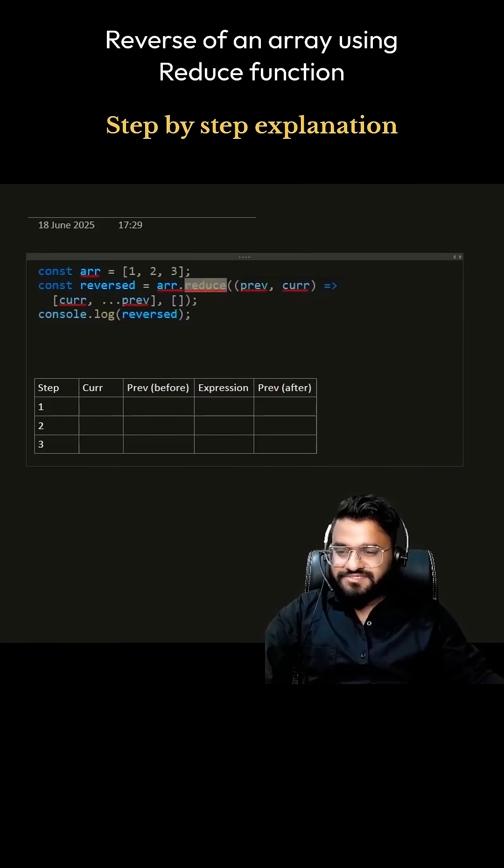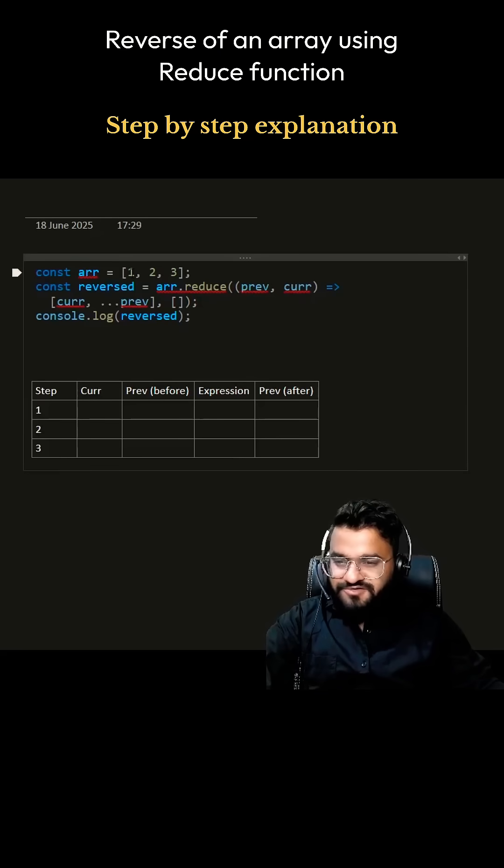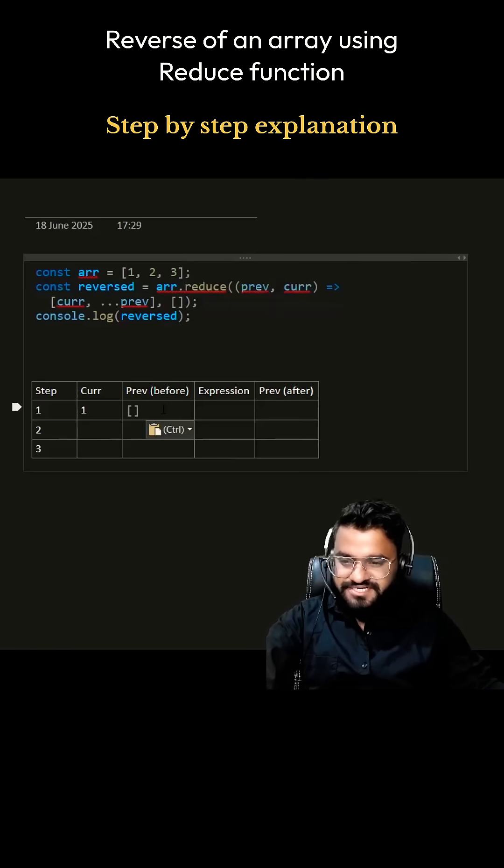This reduce function will be running for three times, so I have given a step 1, a step 2, and a step 3. For step 1, the current value is going to be 1, so we can keep 1 here. Previous value is nothing but this empty array, so we can just use it here, empty array.